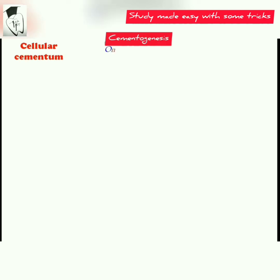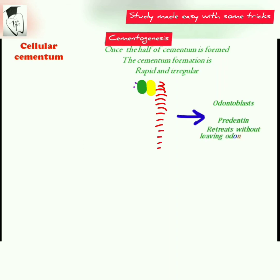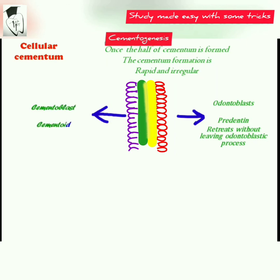Coming to the cellular cementum: once the root is half formed, cementum formation is rapid and irregular. The odontoblasts lay the predentine and retreat without leaving the odontoblastic process, and as soon as the odontoblasts lay the predentine, the cementoblasts lay the cementoid and retreat due to reciprocal induction, resulting in the formation of a hyaline layer.